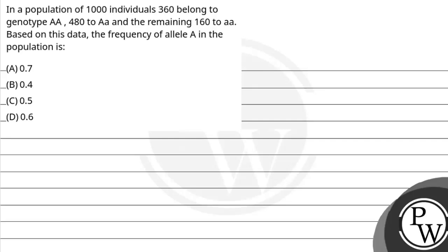Hello Bachyo, let's read this question. The question says, in a population of 1000 individuals, 360 belong to genotype AA, 480 to Aa, and remaining 160 to aa. Based on this data, the frequency of allele A in the population is: